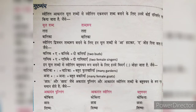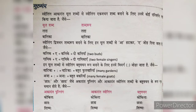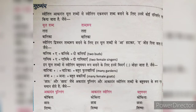Istri Ling अकारांत मूल शब्दों से Istri Ling एक वचन शब्द बनाने के लिए उनमें कोई परिवर्तन नहीं किया जाता है। जैसे मूल शब्द और शब्द रूप में: लता → लता, बालिका → बालिका।